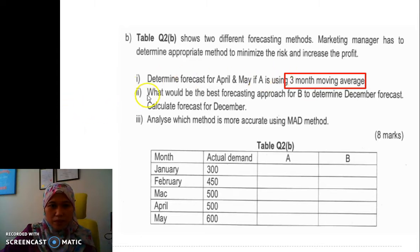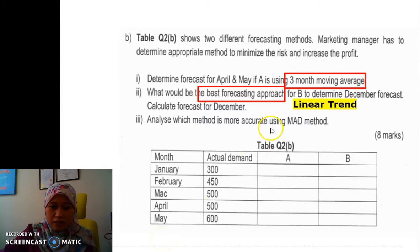The first one is determine forecast for April and May using three-month moving average. The next one: what would be the best forecasting method for B to determine December? We have information until May, so since we need to forecast for December, I think the best method is linear trend. We cannot do exponential because we don't have the alpha value, and for weighted moving average we don't have enough actual data. The third one is which is more accurate between both methods using MAD.